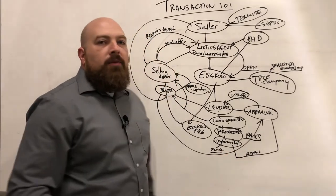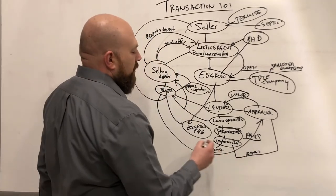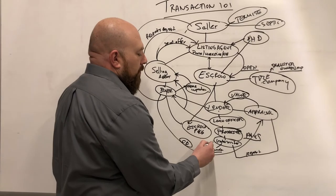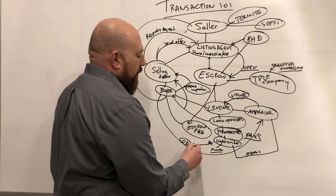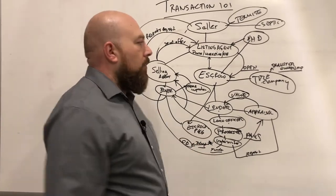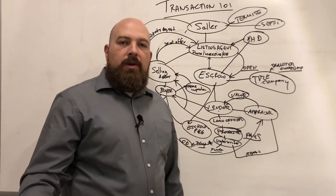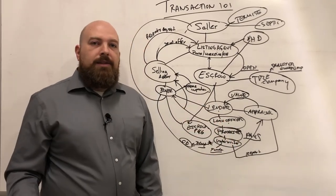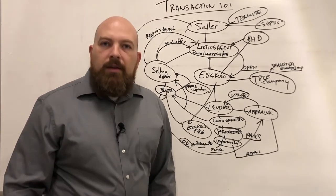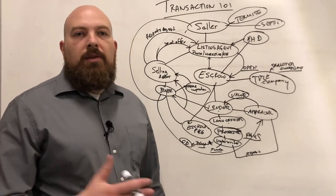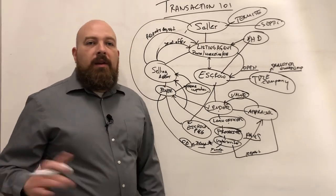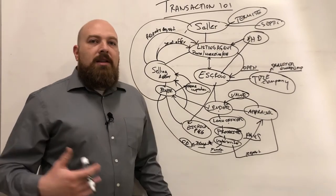Once the underwriter approves, it goes to the funder. In California there's also a closing disclosure — a CD — with a mandatory three-day waiting period after loan approval. After those three days the loan funds and then records. Recording means the county records the new ownership. Escrow sets up the property to be recorded so the new ownership can take place. Once escrow closes, the seller receives their money and all checks are dispersed.